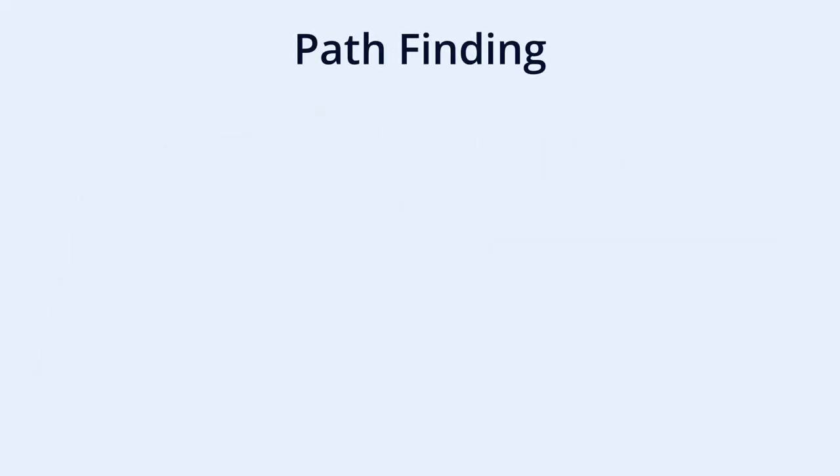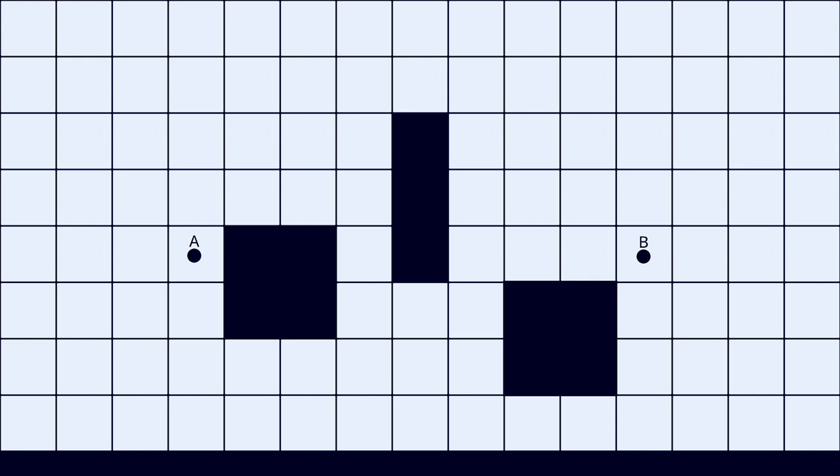The next big part of video game AI is being able to find a path from point A to point B. Let's do a small exercise. We take a grid with a couple of obstacles.